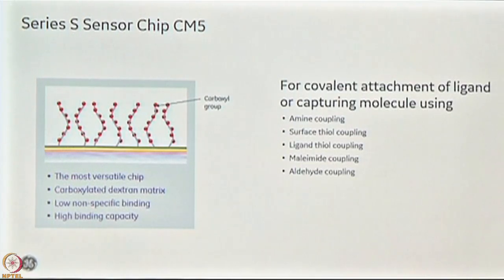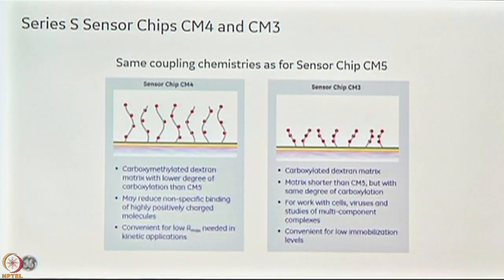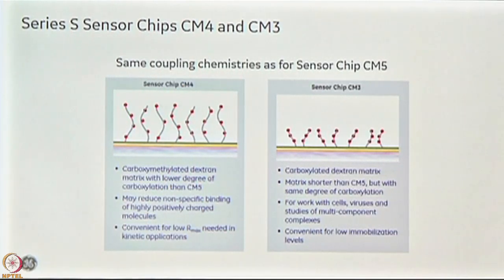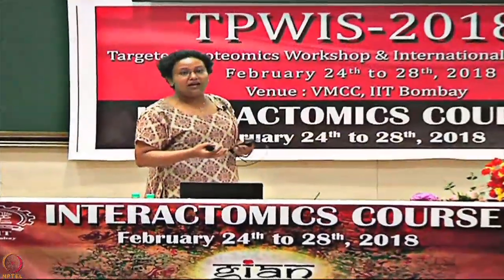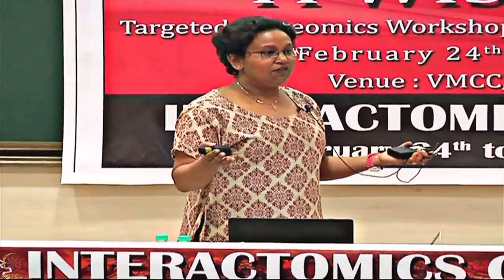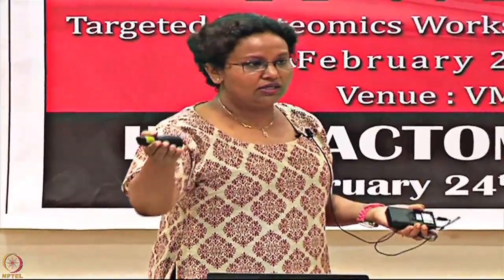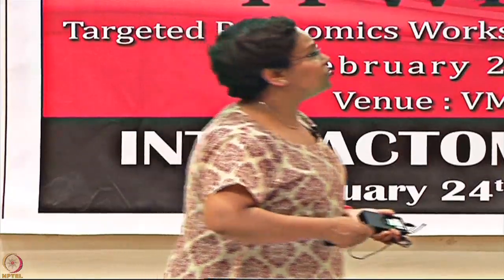CM3 and CM4 are variations of CM5. In CM4, the length of the carboxymethyl dextran is the same as CM5, but the degree of carboxylation is less. In CM3, the degree of carboxylation is the same as CM5, but the length of the dextran is smaller. CM3 and CM4 are useful when you want to work in a low Rmax region, since it is easier to attain lower Rmax with these chips than with CM5.